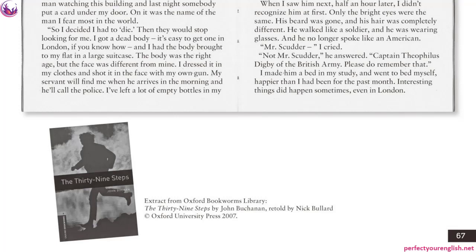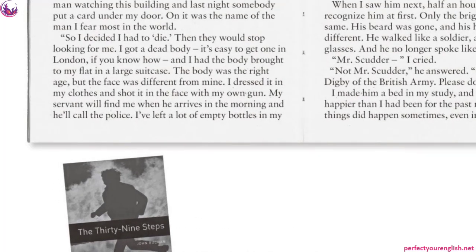Before we start this session, please go to page 67 of your workbooks. There's something I explained before which was a bit complex for some people. In the last paragraph on the left, line 3 is: 'and I had the body brought to my flat in a large suitcase.' I explained that the structure you see here is 'to have someone do something.' Some people asked, then why do we see 'brought' here? Because we have passive. 'I had the body brought' is passive. The structure is 'to have someone do something.' 'I had someone bring the body' — that's the active. The passive form is 'I had the body brought.'